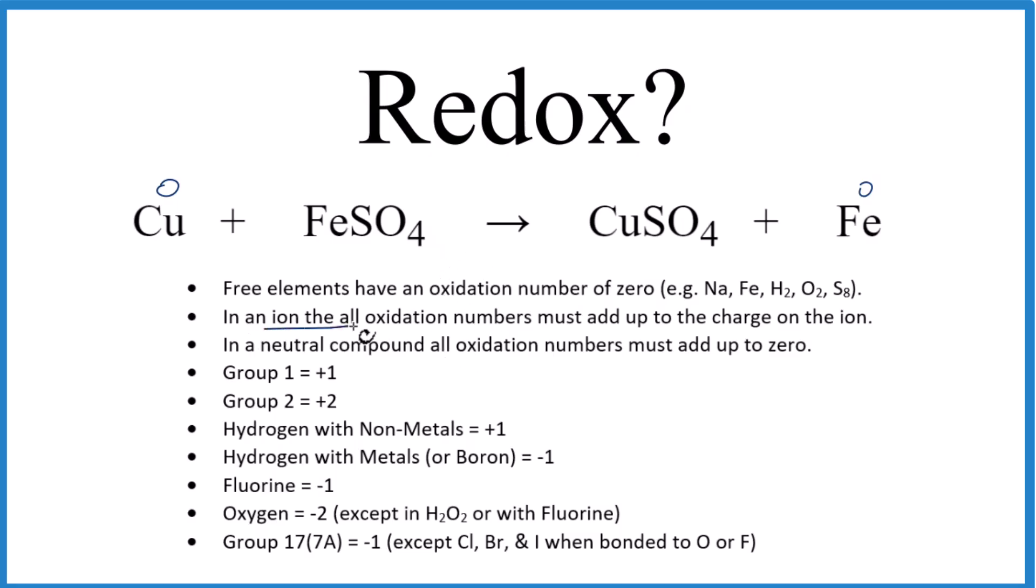When we have an ion, all the oxidation numbers add up to the charge on the ion. So for the sulfate here, we have an ionic charge of two minus, just something you need to remember. That means the iron has to be plus two. And you can already see we're changing from a plus two to a zero, so we probably have a redox.